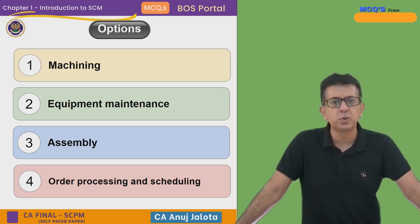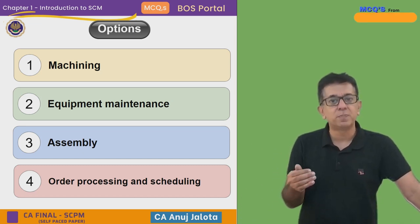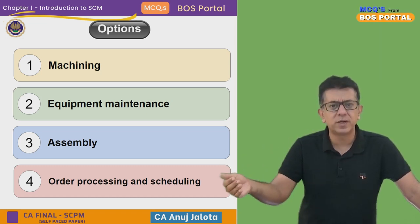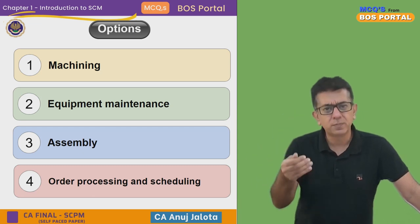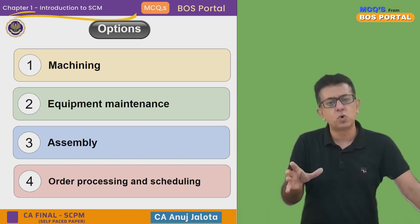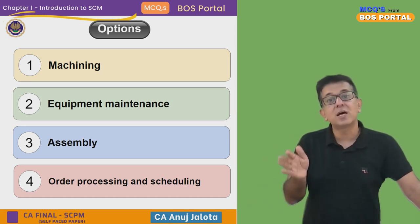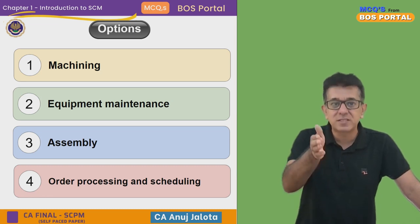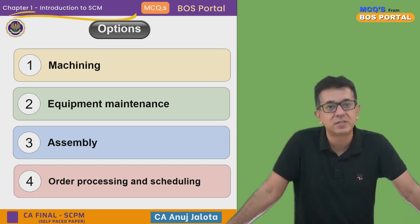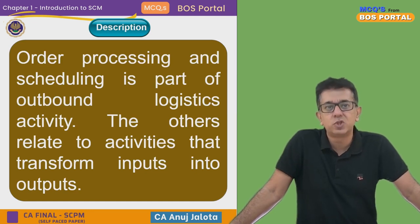Once your goods are completely produced, they have to be dispatched to the consumer. Order processing is where billing and related things are done. Scheduling means you arrange the time when goods will be dispatched and plan logistics for delivery. Like when you purchase anything on Amazon or Flipkart, you get a message that your goods are scheduled to be delivered on a particular date — that is order processing and scheduling.